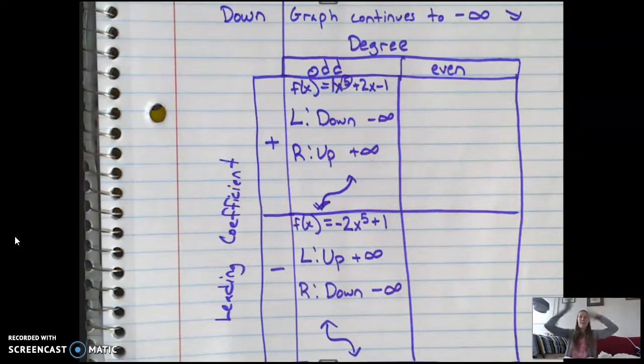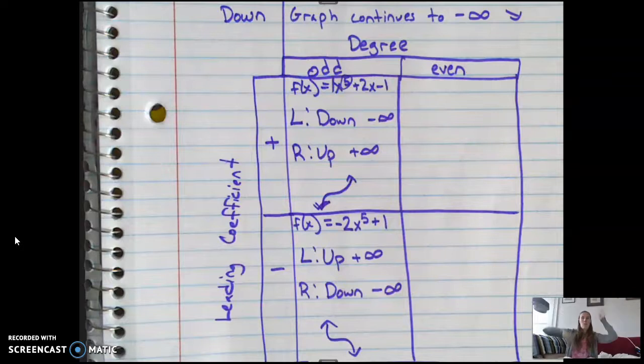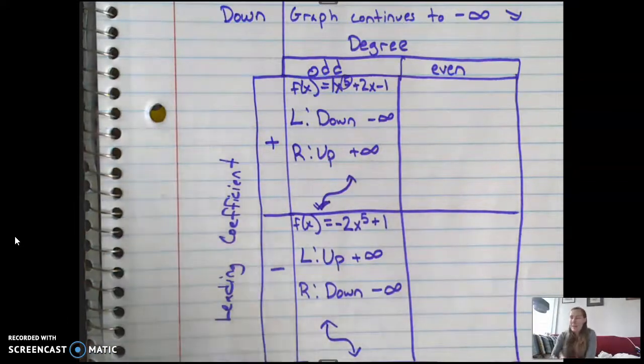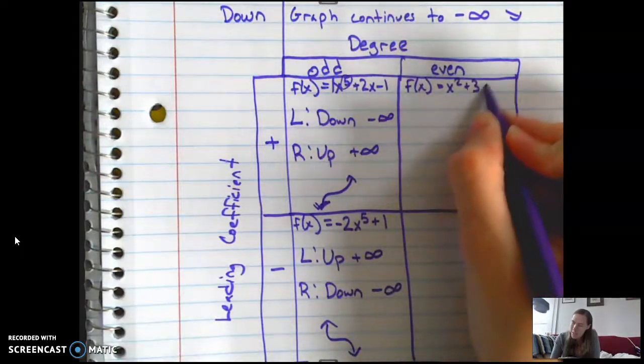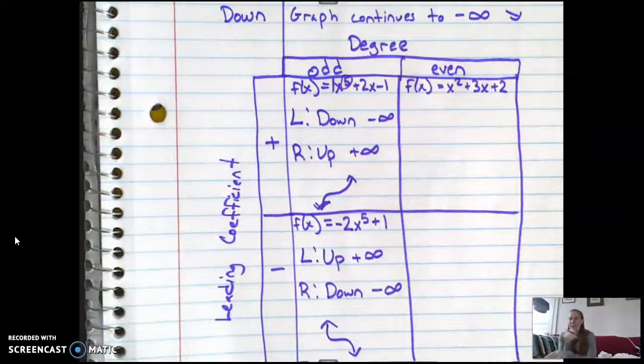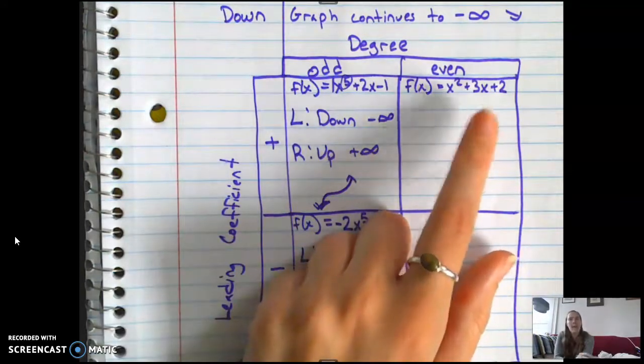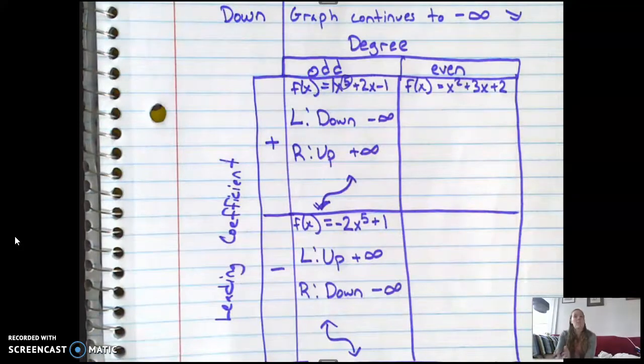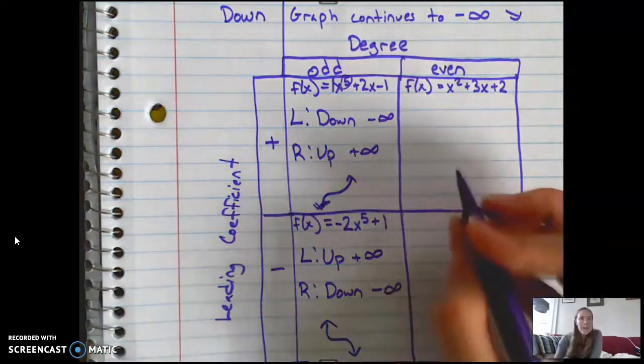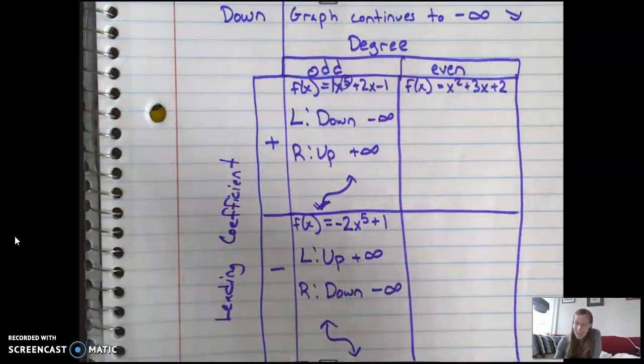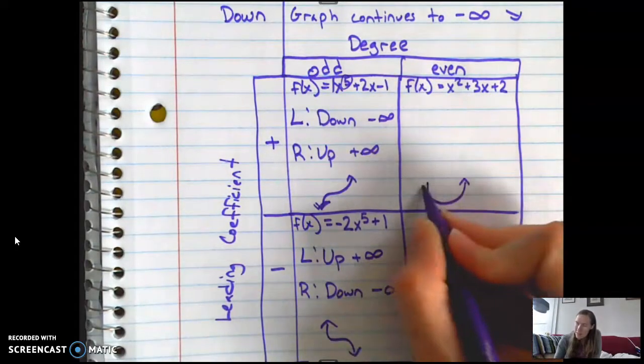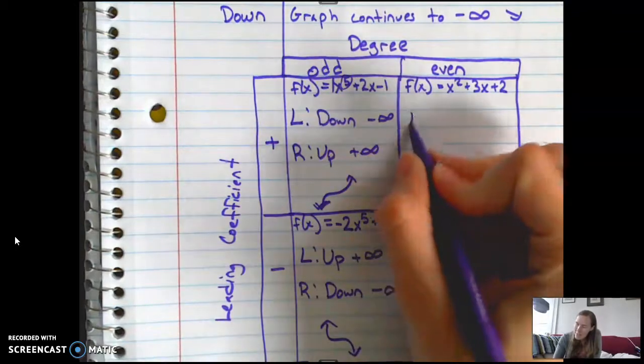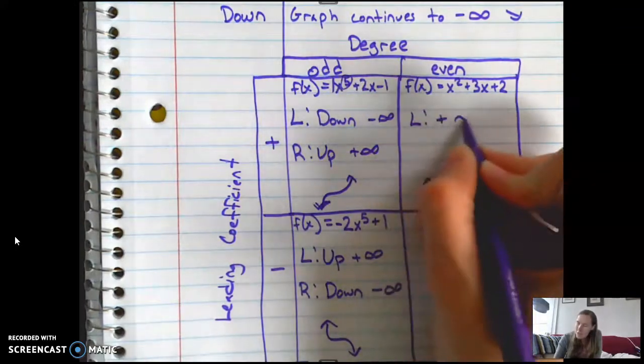So even, if odd is opposite, even is going to be the same. I'm doing like a weird polynomial dance right now with end behavior. So say that it's even. Say that I had f of x equals x squared plus 3x plus 2. Well first, we've seen something like this before. What type of polynomial is this? It's a quadratic. So we know that this, because it's a quadratic or a parabola, and it's positive and even, it's going to look like a little smiley face. So that means our left, it's going up. So it's positive infinity.